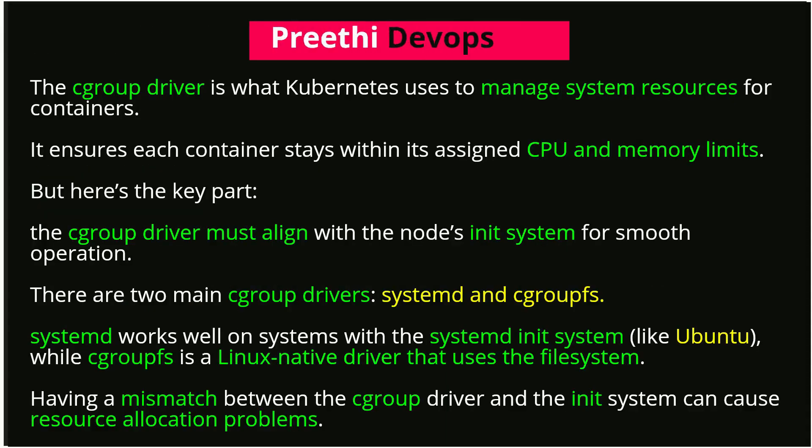The cgroup driver is what Kubernetes uses to manage system resources for containers. It ensures each container stays within its assigned CPU and memory limits. But here's the key part: the cgroup driver must align with the node's init system for smooth operation.